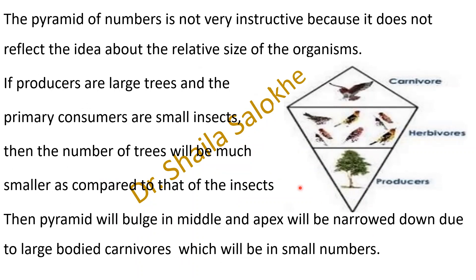The pyramid of numbers is not very instructive because it does not reflect the idea about the relative size of organisms — here we consider only the number of organisms. So if producers are large trees and the primary consumers are small insects, the trees are fewer in number than the insects. Then the pyramid will bulge in the middle, and the secondary consumers will again be fewer in number, with the apex narrowed down due to large-bodied carnivores.